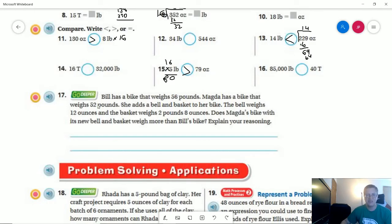So Bill has a bike that weighs 56 pounds. We have another bike that weighs 52, and then she adds a bell and basket. So the bell weighs 12 ounces and the basket weighs two pounds eight ounces. So we are going to have 16 ounces in a pound. So this part here, 12 plus 8 is going to give me 20 ounces, which is going to be worth one pound, four ounces. And we add that to our two pounds. That would give us three pounds, four ounces. So no, this would be less.